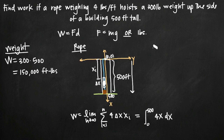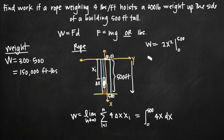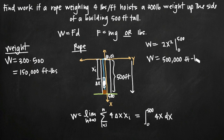This integral is straightforward to solve. Taking the integral of 4x gives us 2x². We evaluate 2x² on the interval from 0 to 500. Plugging in 500: 500 squared is 250,000, times 2 gives 500,000. Plugging in 0 gives 0. So the work done on the rope is 500,000 foot-pounds.